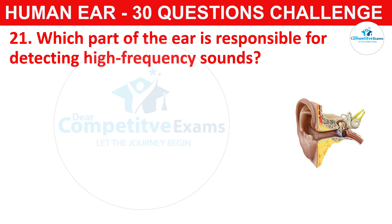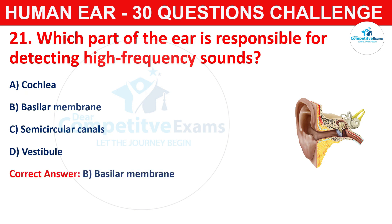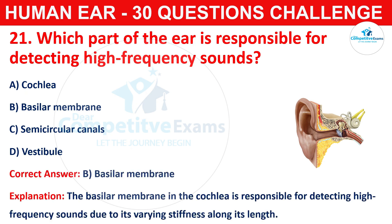Question number twenty-one: which part of the ear is responsible for detecting high-frequency sounds? Your options are cochlea, basilar membrane, semicircular canals, or vestibule. The correct answer is B, that is basilar membrane. The basilar membrane in the cochlea is responsible for detecting high-frequency sounds due to its varying stiffness along its length.